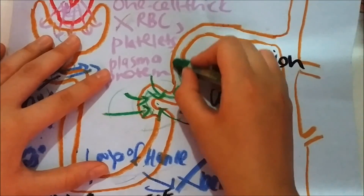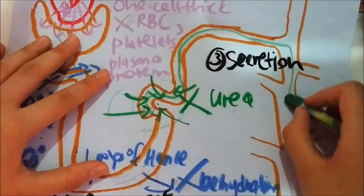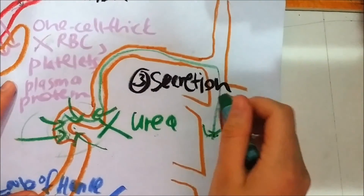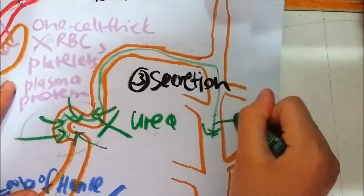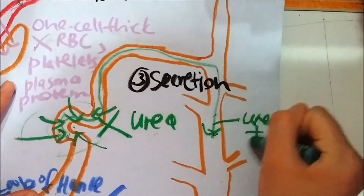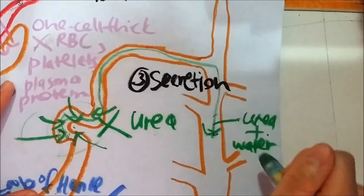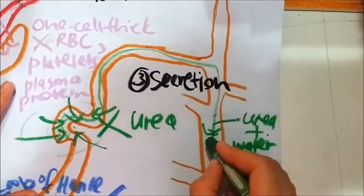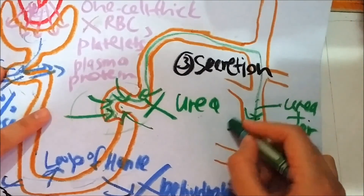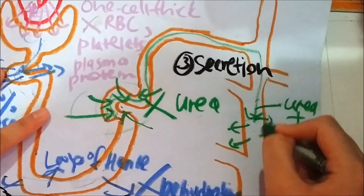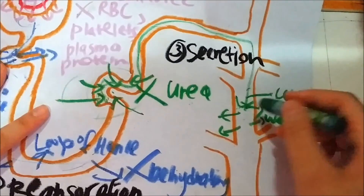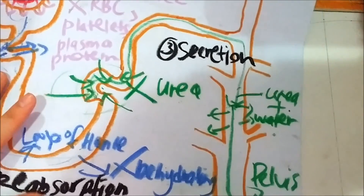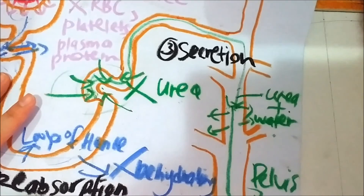The filtrate will then flow into the collecting duct. At this part, the filtrate contains urea and water. Because we don't want the urine to have too much water, reabsorption of some water will be done here. Lastly, it will be transported into the pelvis and excreted out in the form of urine.